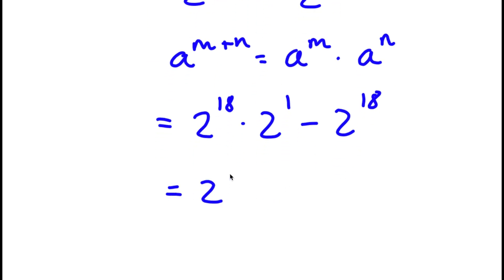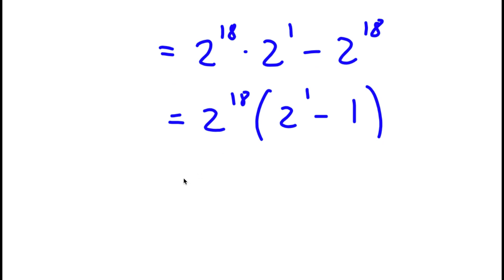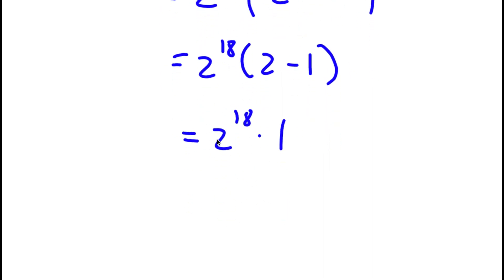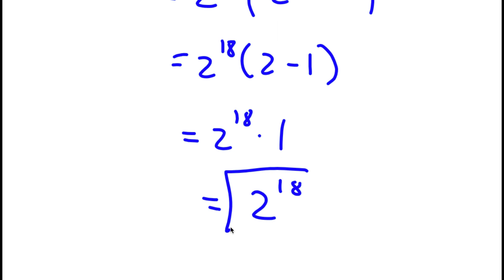From here, I can go ahead and factor out 2 to the power of 18. So I have 2 to the power of 18 times 2 to the power of 1 minus 1. Now, 2 to the power of 1 is simply equal to 2, so I have 2 to the power of 18 times 2 minus 1. And 2 minus 1 is equal to 1, so now I have 2 to the power of 18 times 1, which is simply just 2 to the power of 18.